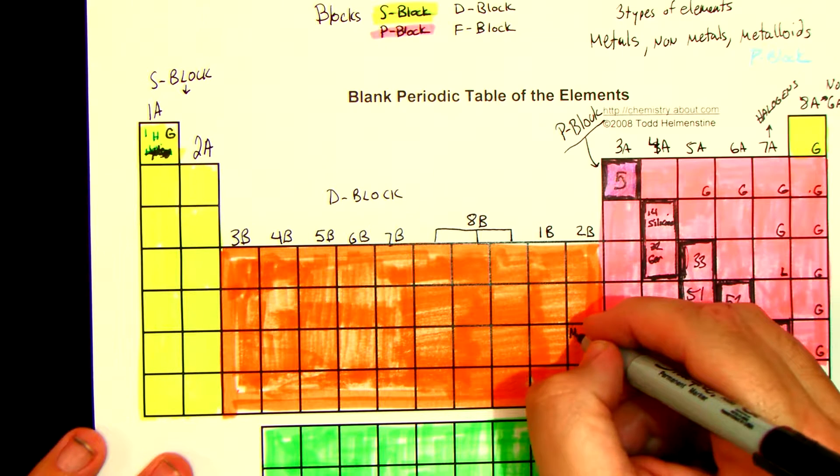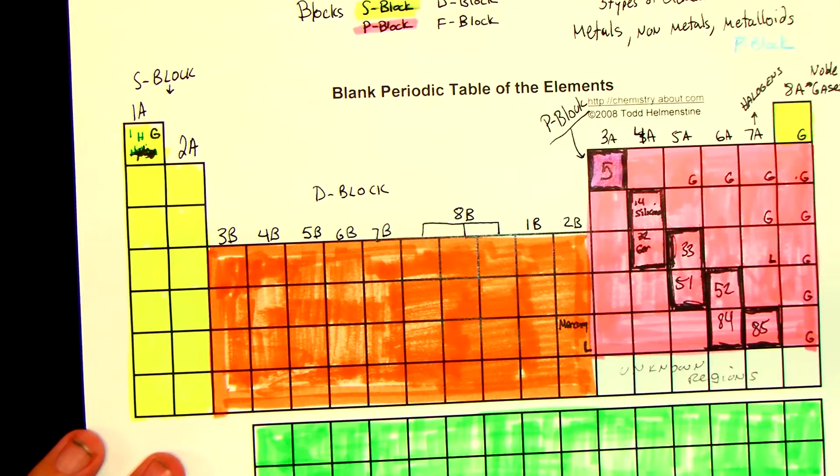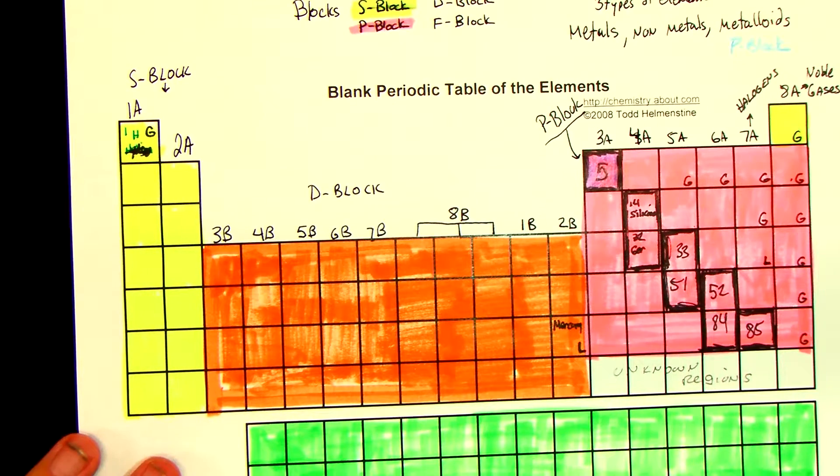Mercury is the only liquid metal — everything else is solid.